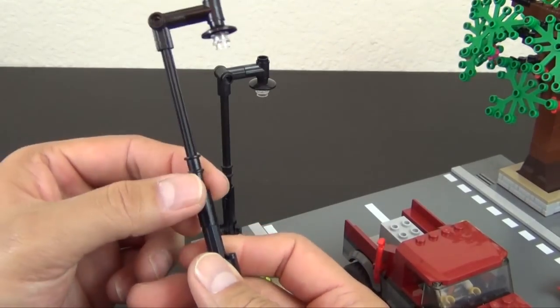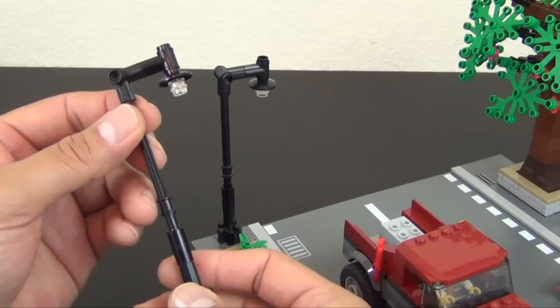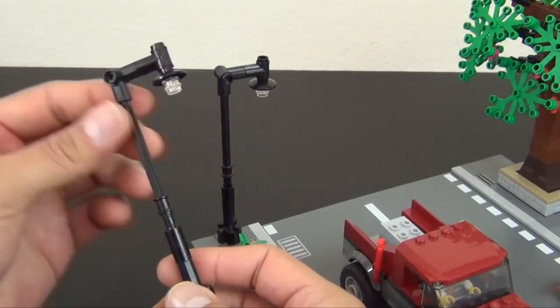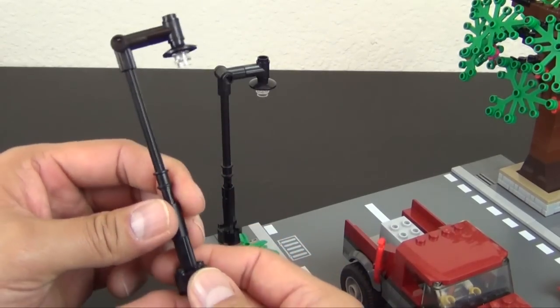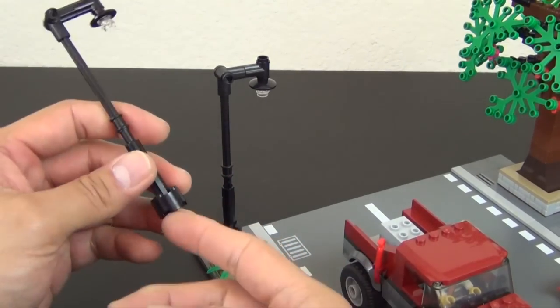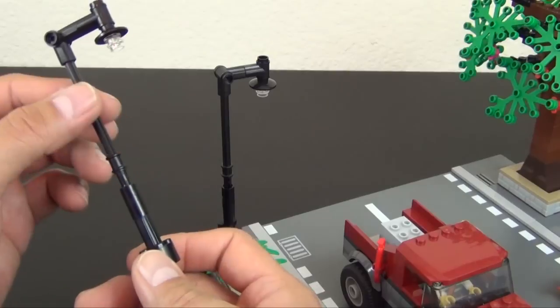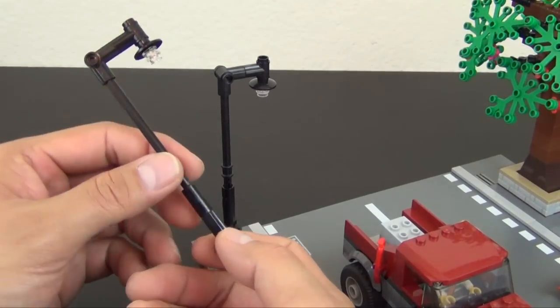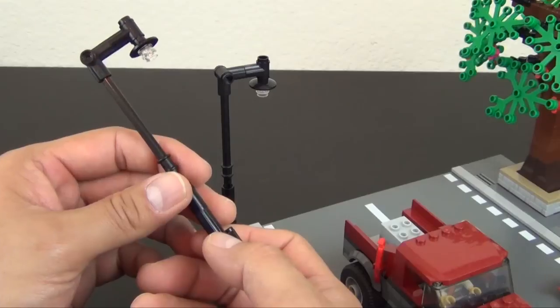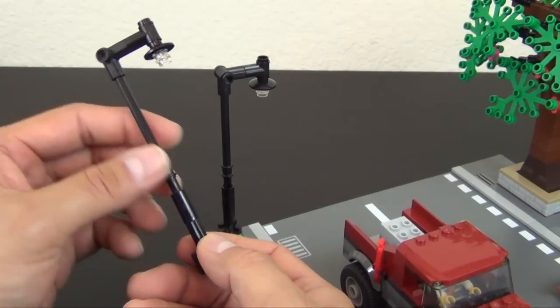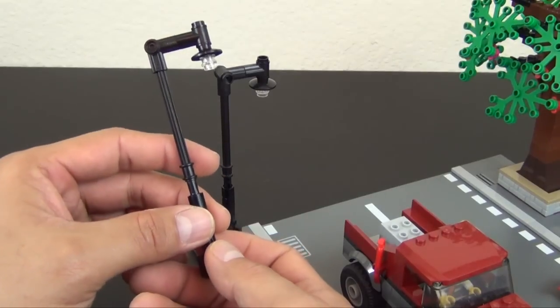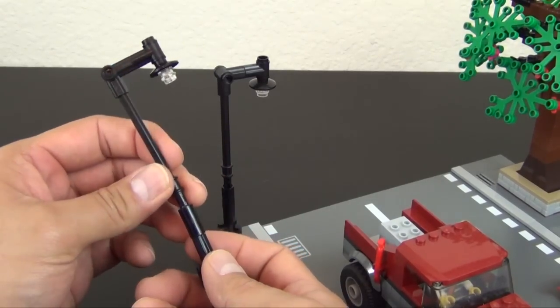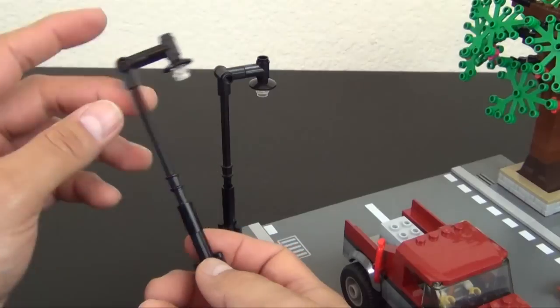The techniques are really how do you make this look like a pole and then still give it actual structural stability to withstand being bumped or falling over and broken. The key is the Technic element. Technic in general is just such a strong construction.